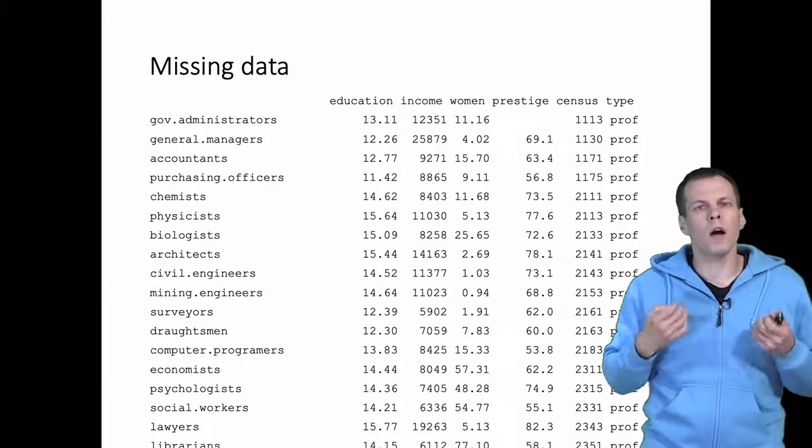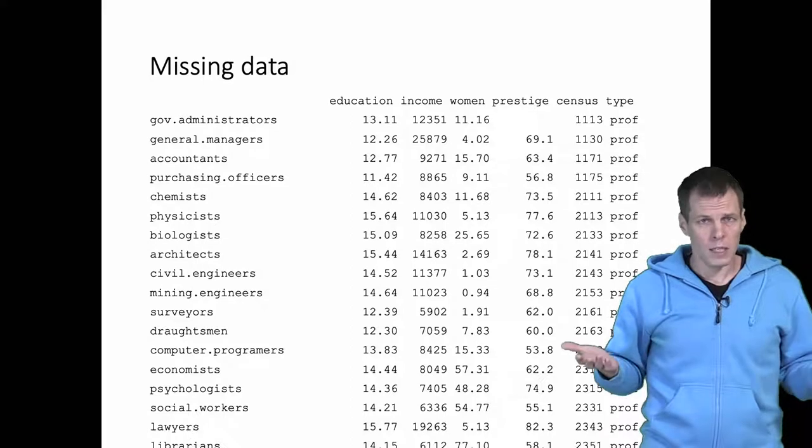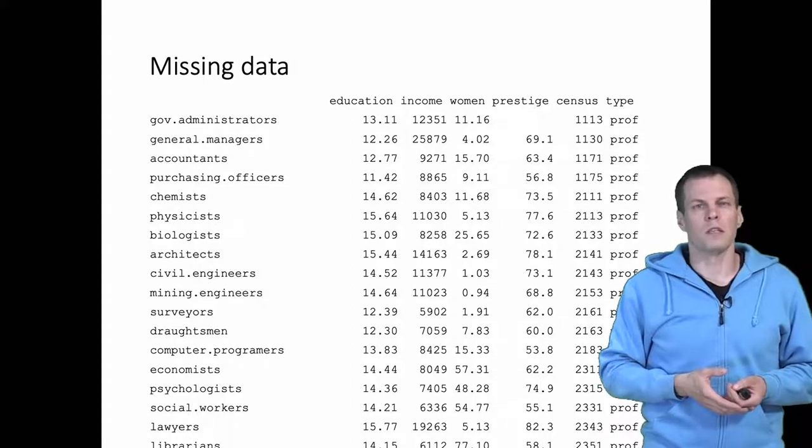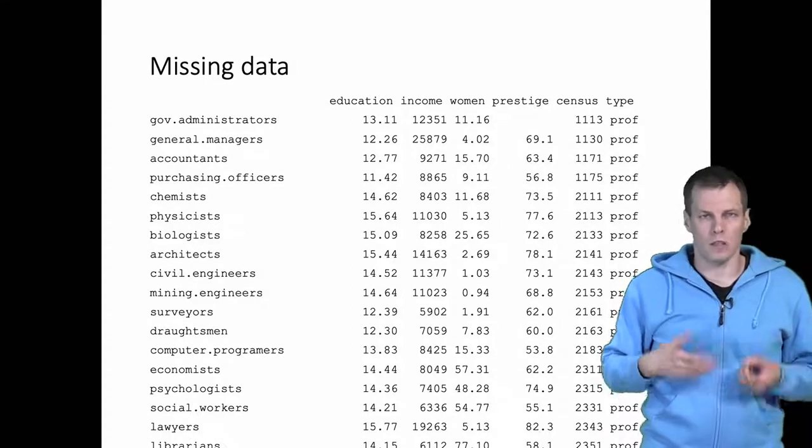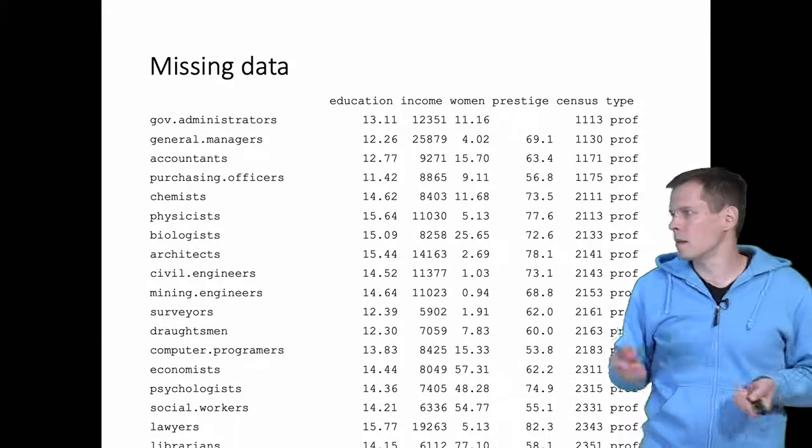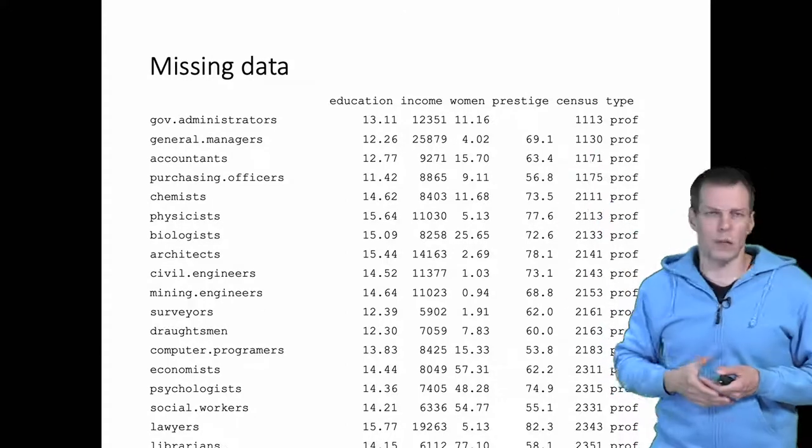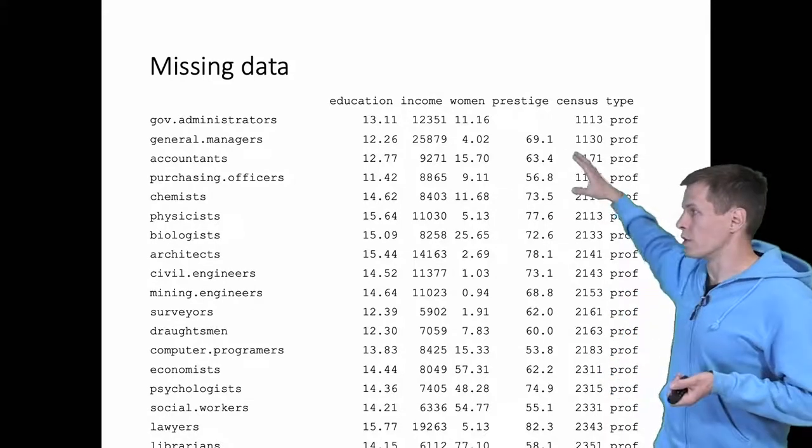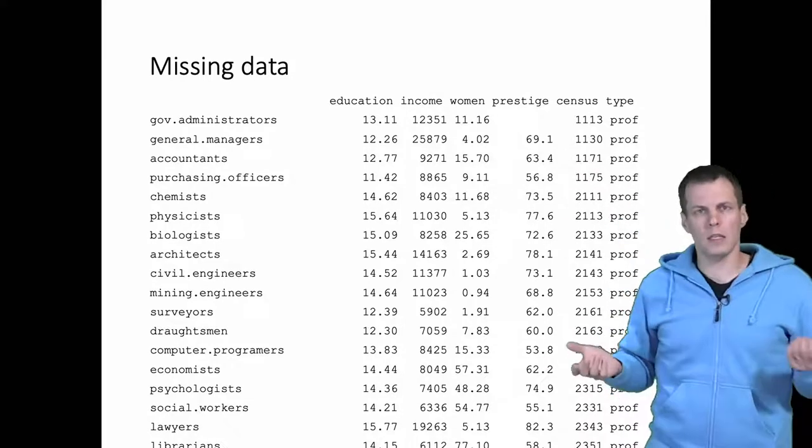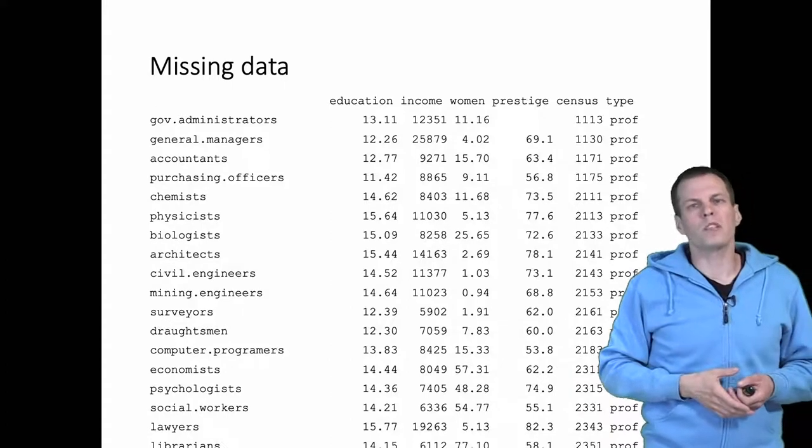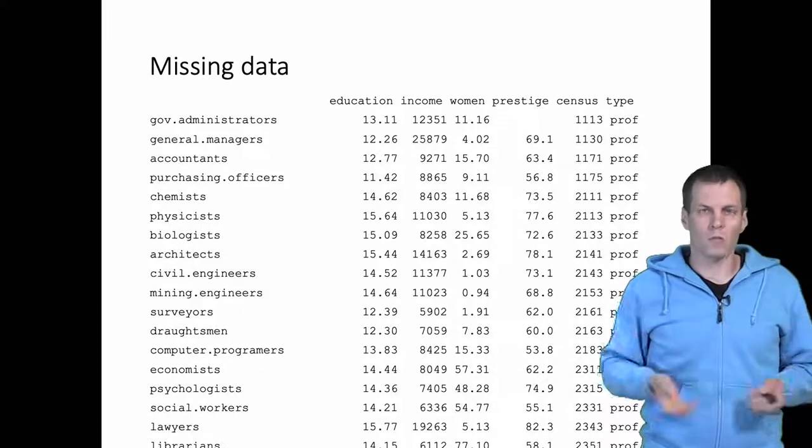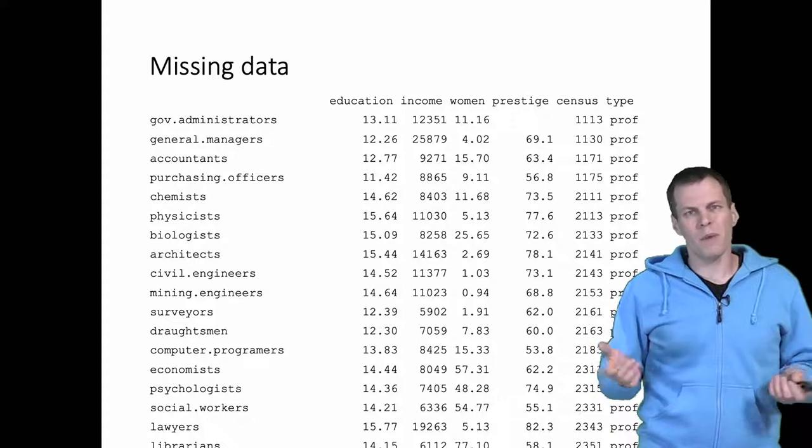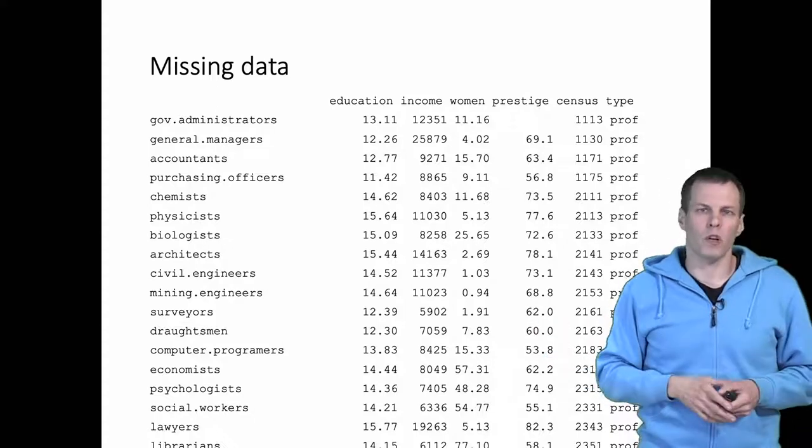If we use these data to run a regression analysis, then by default our statistical software will simply drop government administrators from the data and run the regression model using the rest of the cases. Is that a big problem? We'll still have a bit more than 100 observations, so maybe dropping one out of a bit more than 100 is okay.